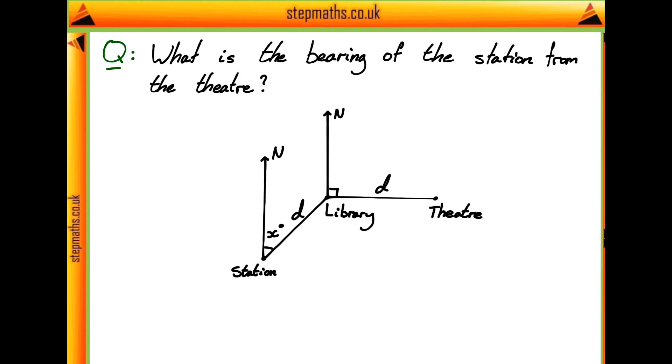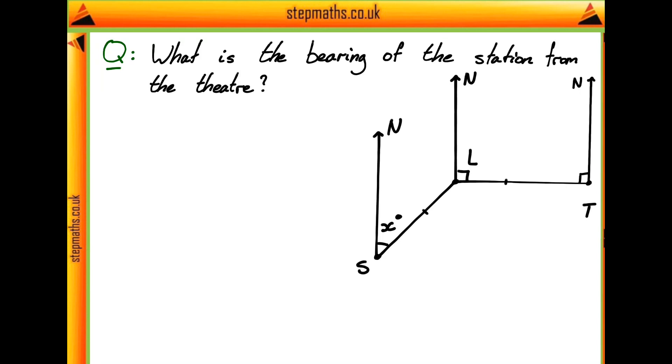So what we're asked to do is to find the bearing of the station from the theatre. To answer this question, the first thing I'm going to do is think about what this bearing of the station from the theatre actually is. I've labeled north at our theatre here because we're doing a bearing about the theatre because it's going to be from the theatre to the station.